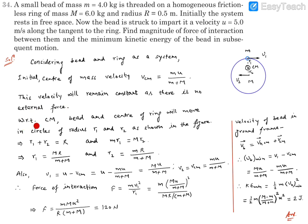Since there is no external force, with respect to the center of mass the bead and the center of the ring move in circles of radii r1 and r2 as shown. The center of mass is stationary; the bead moves in a circle of radius r1, and the center of the ring moves in a circle of radius r2. We have r1 + r2 = R, and from the center of mass condition m·r1 = M·r2. Solving these two equations: r1 = MR / (m + M) and r2 = mR / (m + M).